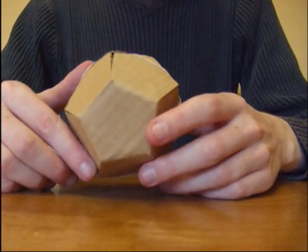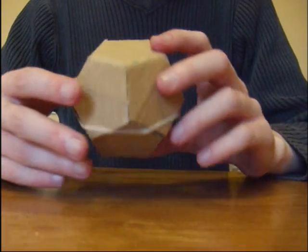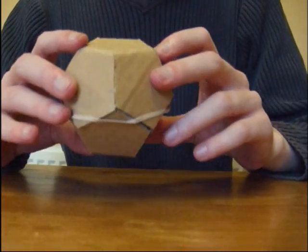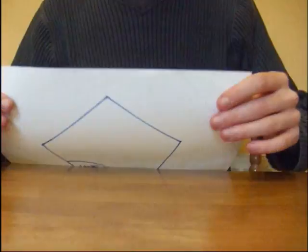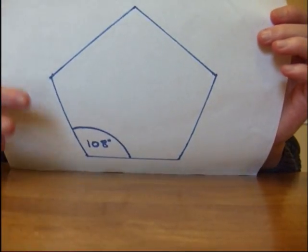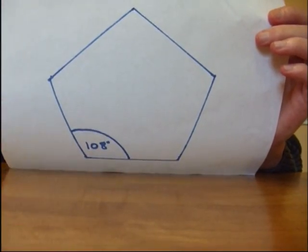Now the dodecahedron is a platonic solid and is so cool because it has 12 faces and each face is a regular pentagon. Now the regular pentagon is a shape of five sides of equal length with internal angles of 108 degrees.